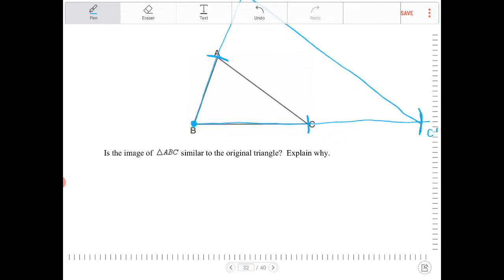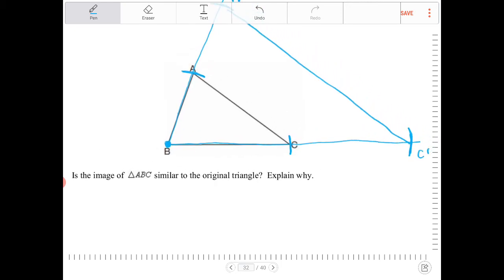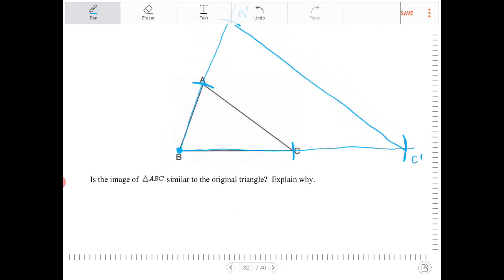There's a follow-up question here. It says, is the image of ABC similar to the original triangle? Explain why. So it absolutely is going to be similar. And the reason for that is, A prime B over AB is equal to C prime B over CB. And this is both equal to 2. And angle B is congruent to itself. It's being shared by both triangles.